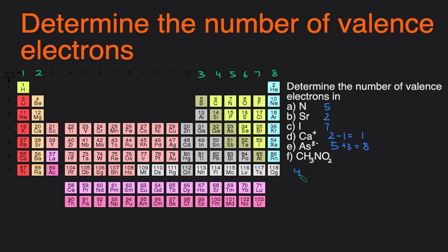Carbon has four valence electrons. You can see right here it's in the fourth main group column. Hydrogen has one valence electron, but because there are three hydrogens, you multiply three hydrogens times one valence electron in each hydrogen.